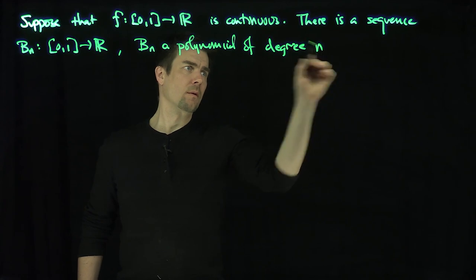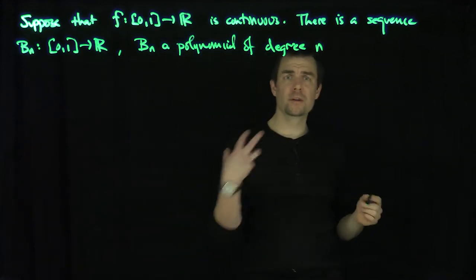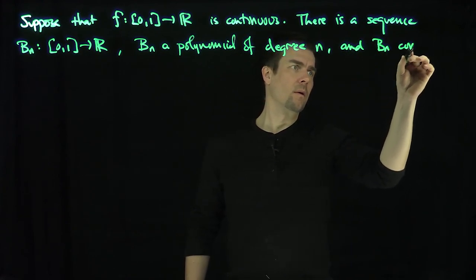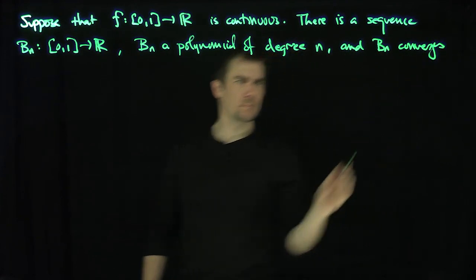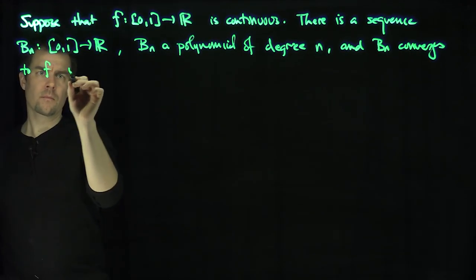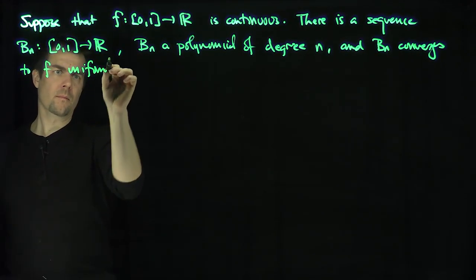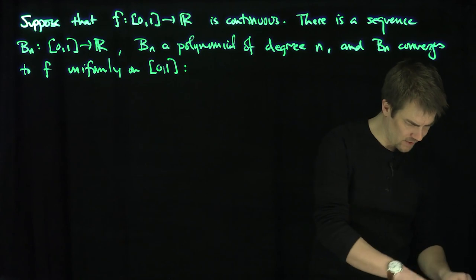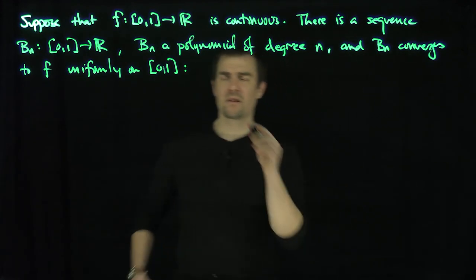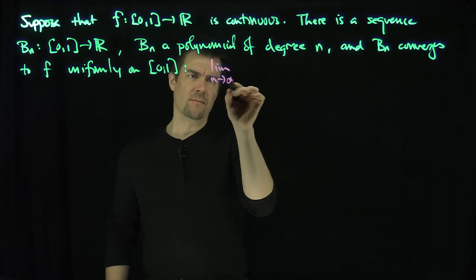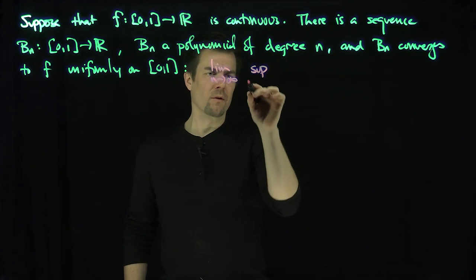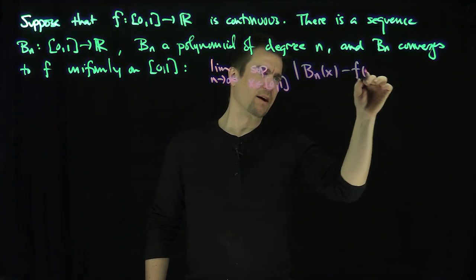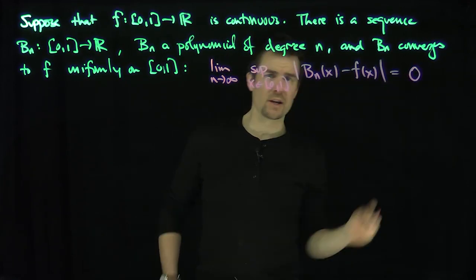And Bn converges to f uniformly on [0,1]. What does that mean? The uniform convergence means that if I take the limit as n goes to infinity of the supremum over all x in [0,1] of the absolute value of Bn(x) minus f(x), this supremum is equal to 0.